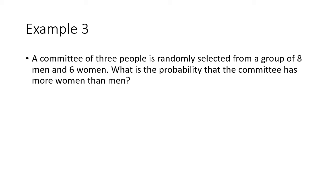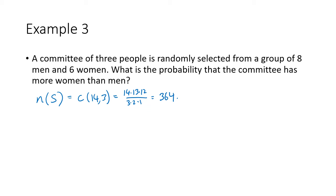Finally, a committee of three people is randomly selected from a group of eight men and six women. What is the probability that the committee has more women than men? The size of our sample space is 14 choose 3. In a committee, order doesn't matter, and we have 14 people to pick from and choose three, giving 14 × 13 × 12 / (3 × 2 × 1) = 364. There are two ways the committee can have more women than men: two women and one man, or three women and no men.